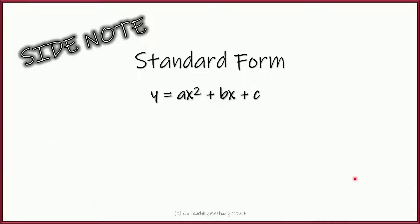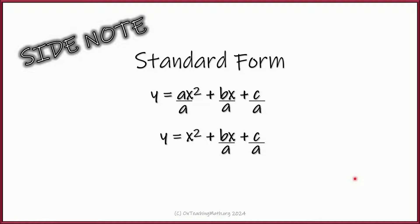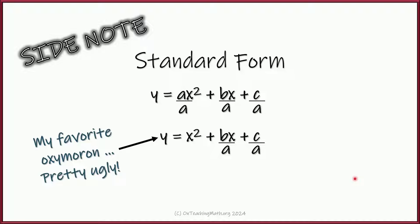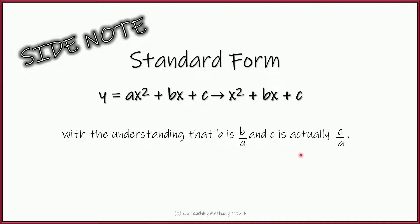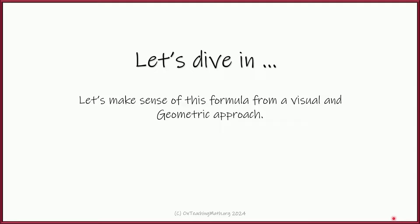Before we dive in, one small note: in standard form ax squared plus bx plus c, if we have a leading coefficient of a, it gets really ugly to write. So what we're going to do is divide everything by a. Instead, we'll just write x squared plus bx plus c, understanding that b over a is still the coefficient of x and the constant is still c over a. We could substitute those back in if needed — it's just cleaner to look at.